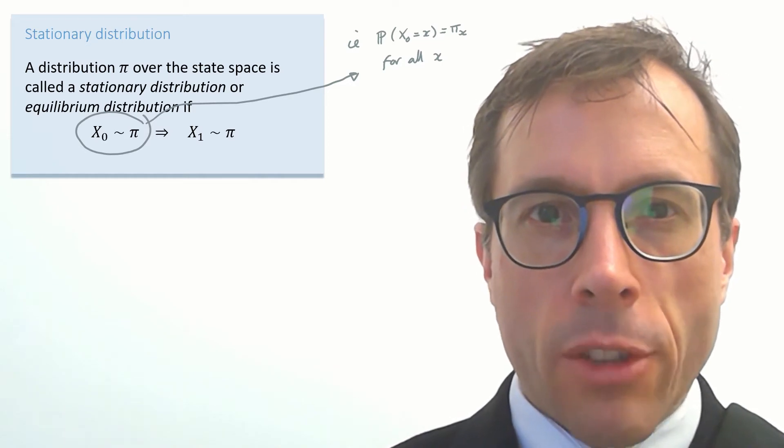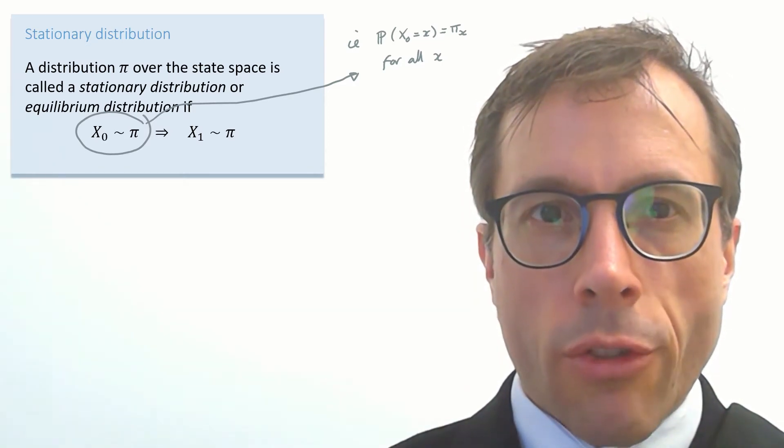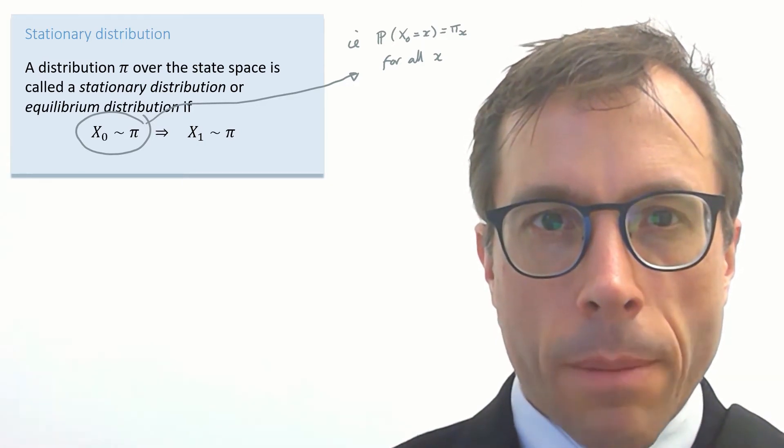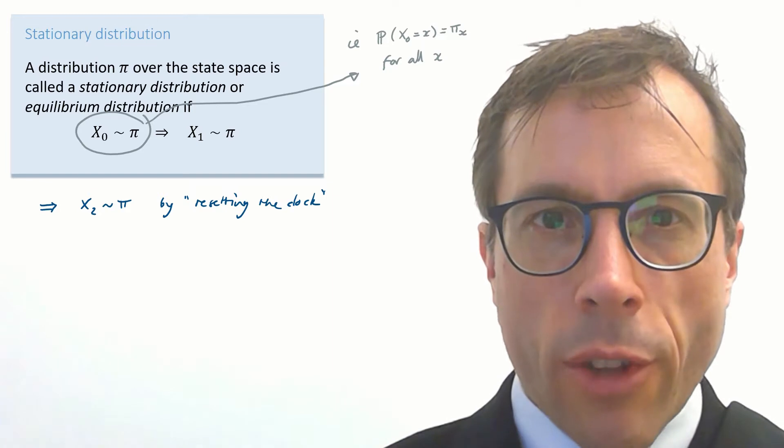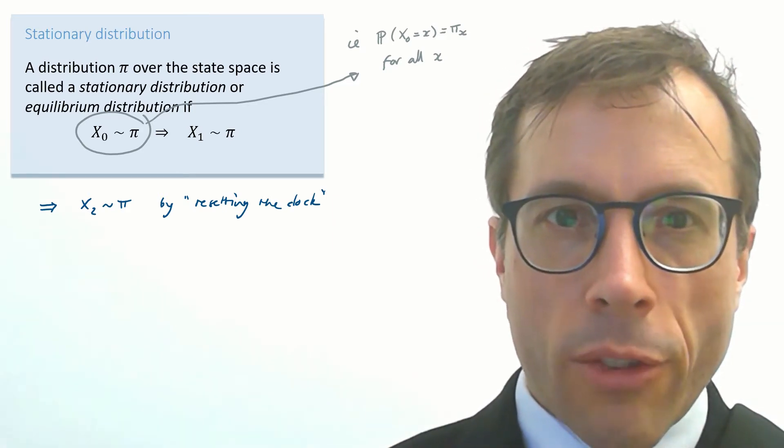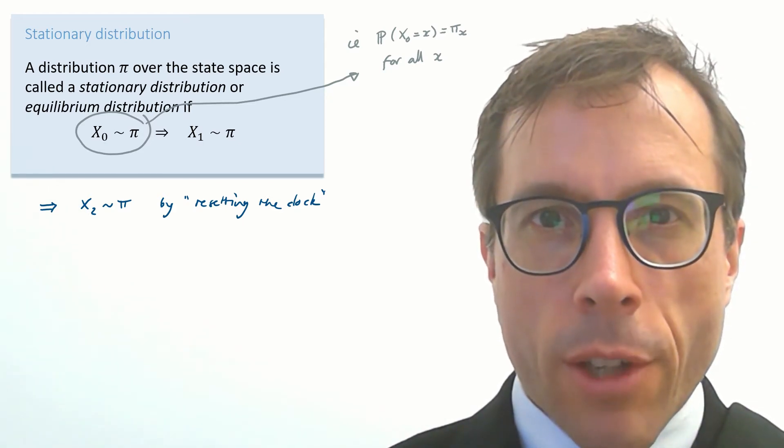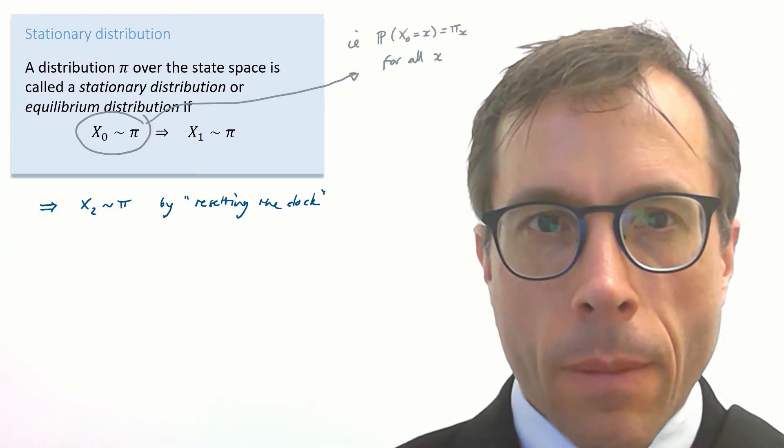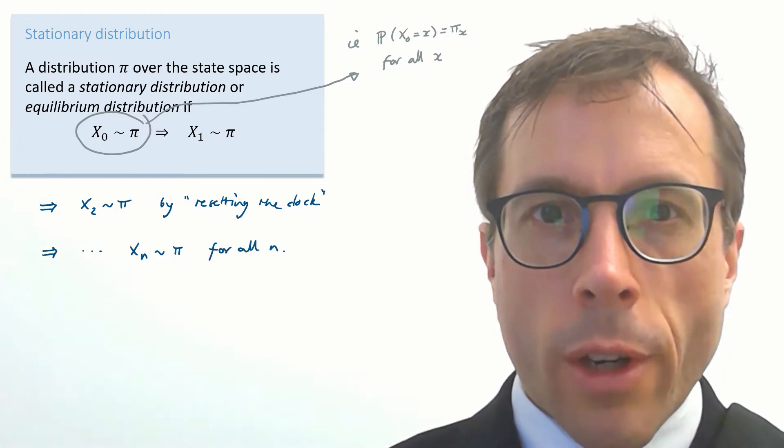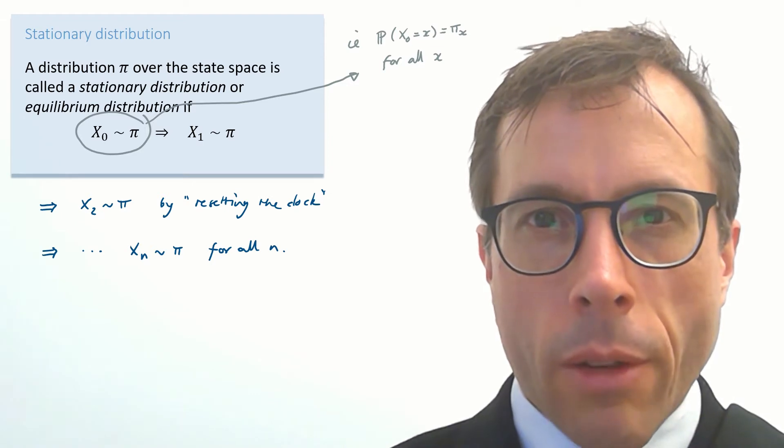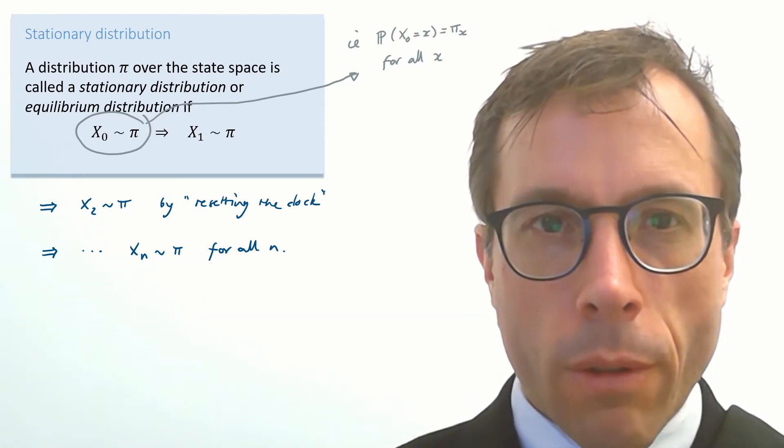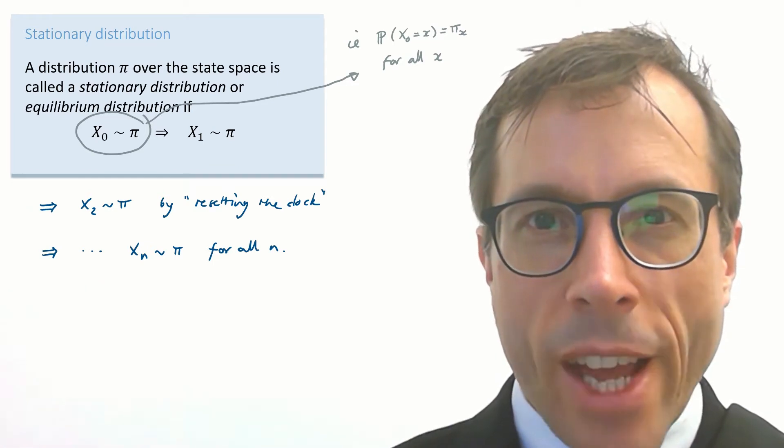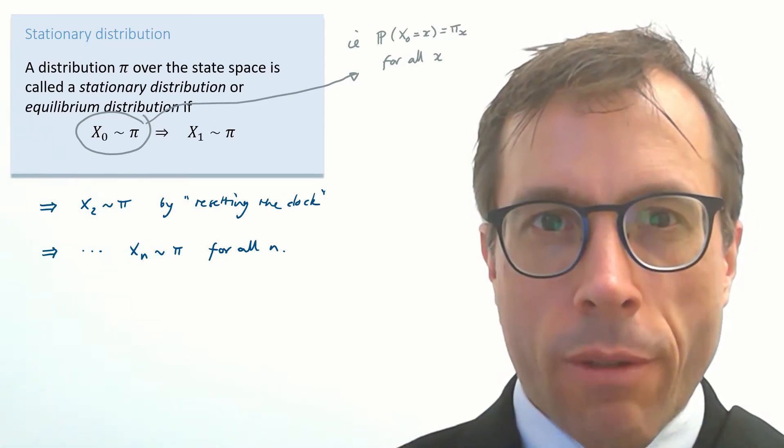The definition says that if we pick the initial state randomly like this, then the state in the next time step will also have distribution π. And then we can reset the clock—it doesn't matter when we start. The Markov chain doesn't matter whether we start counting from time one or from time zero. So we can justify the definition again and say because X₁ had distribution π, therefore X₂ will have distribution π, and so on. By induction, the distribution is the same at every time step. That's why it's called the stationary distribution, because the distribution doesn't move. Remember, the Markov chain itself is moving—it jumps around from state to state. It's not X_n that is stationary, it's the probability distribution of X_n that is stationary.